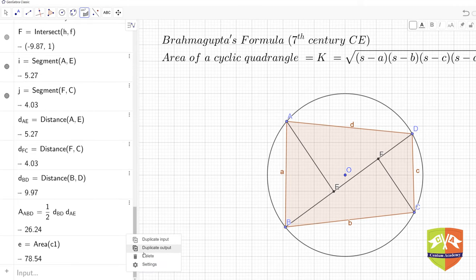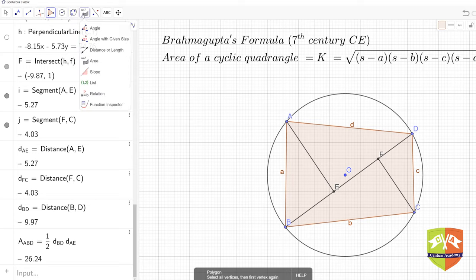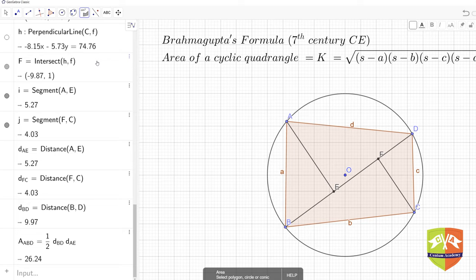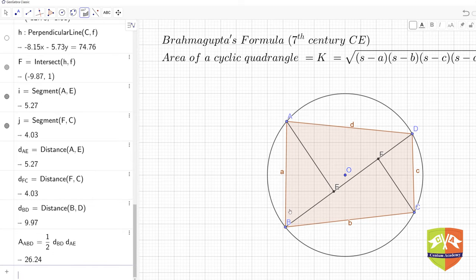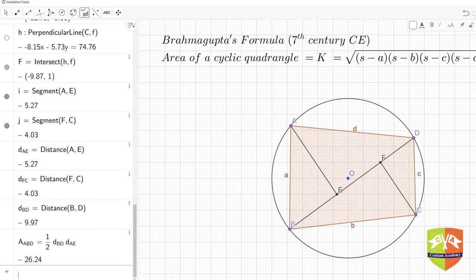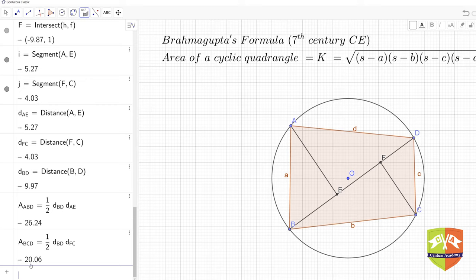Now I'm interested in finding the area of BCD. Area of BCD equals half, so one by two, times base BD times altitude FC. And here is the area: 26.24 and 20.06.